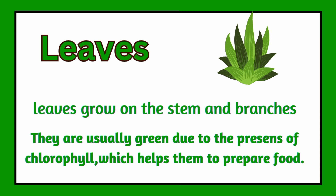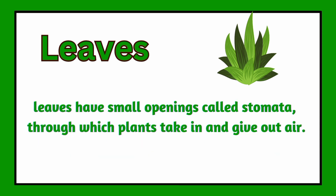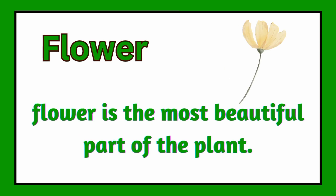Leaves are usually green due to the presence of chlorophyll, which helps them to prepare food. Leaves have small openings called stomata, through which plants take in and give out air.